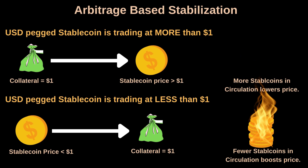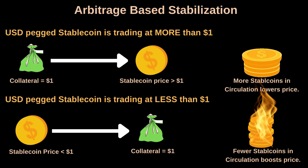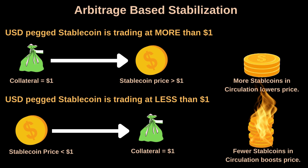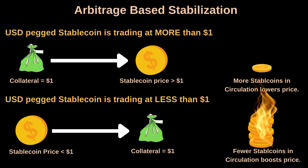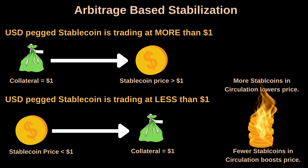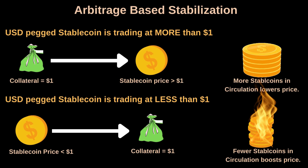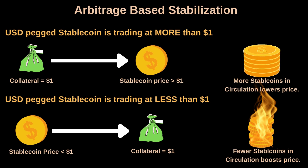In this way, more stablecoin units come into circulation, lowering the price of the stablecoin. On the other hand, when the stablecoin price drops below 1 USD, an arbitrator can buy the stablecoin and then exchange it for collateralized assets worth 1 USD, profiting from the price difference.